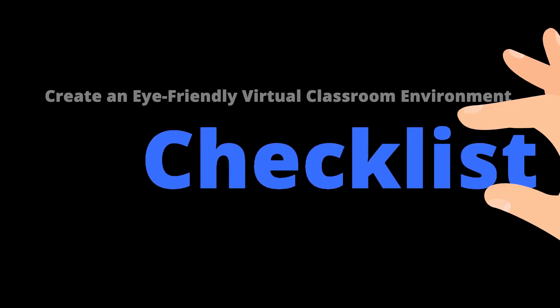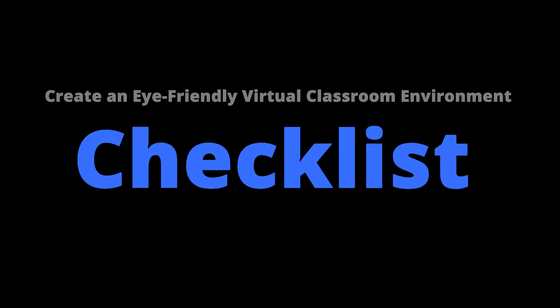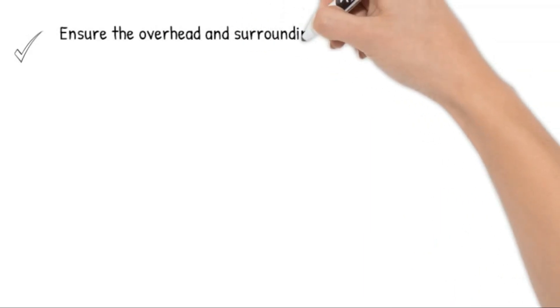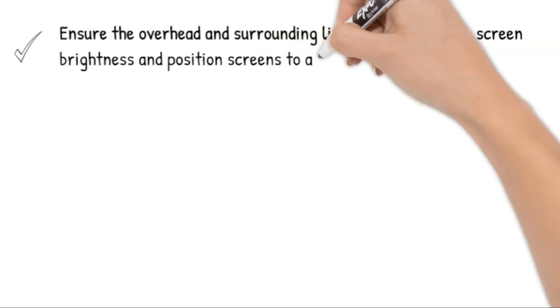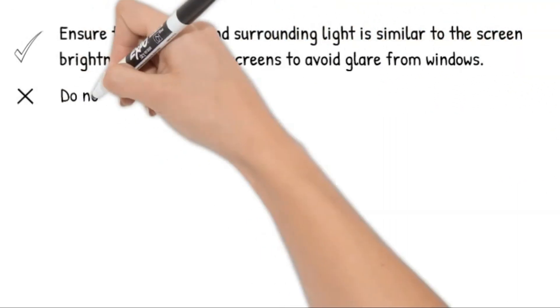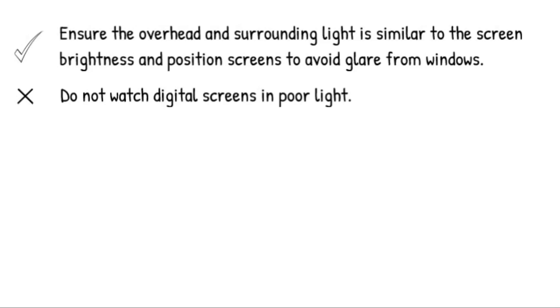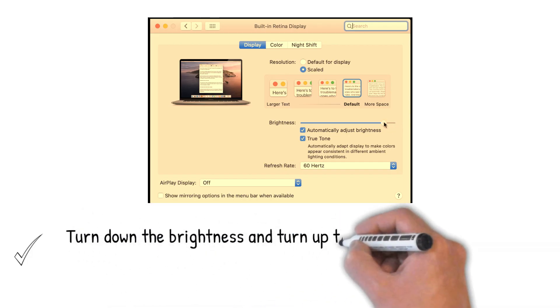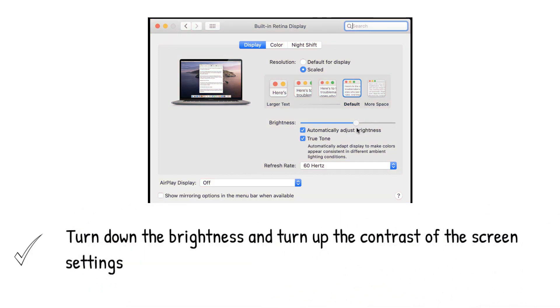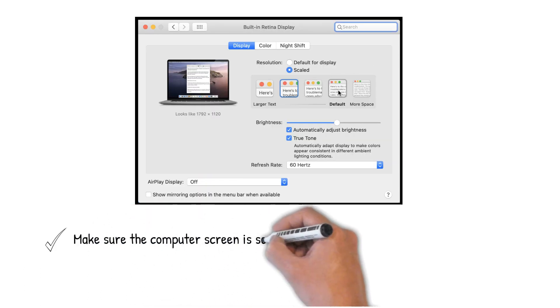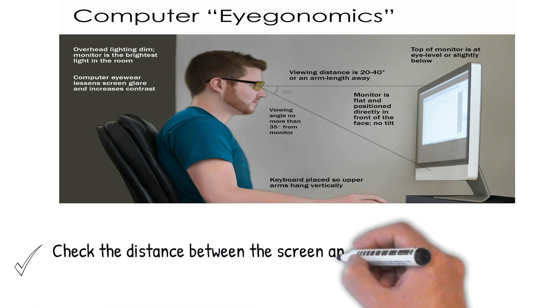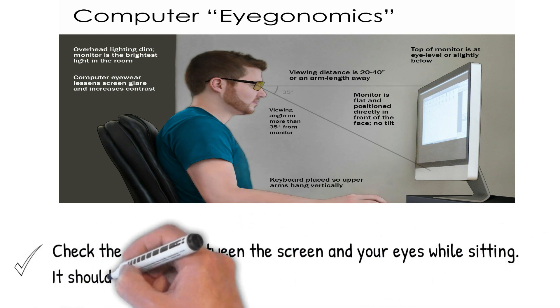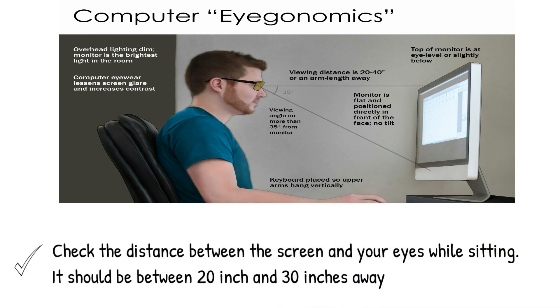Before starting online learning, let's create an eye-friendly virtual classroom environment. Ensure the overhead and surrounding light is similar to the screen brightness, and position screens to avoid glare from windows. Do not watch digital screens in poor light. Turn down the brightness and turn up the contrast of the screen settings. Make sure the computer screen is set to a high resolution. Check the distance between the screen and your eyes while sitting — it should be about 20 to 30 inches away.